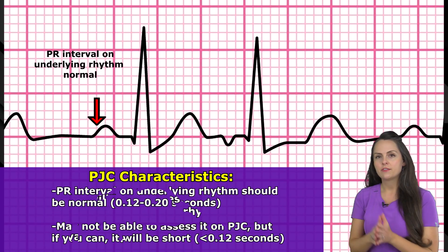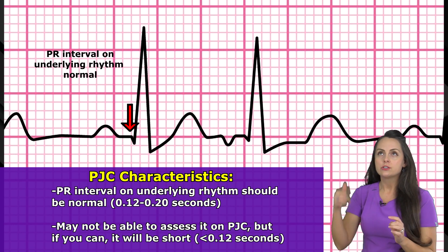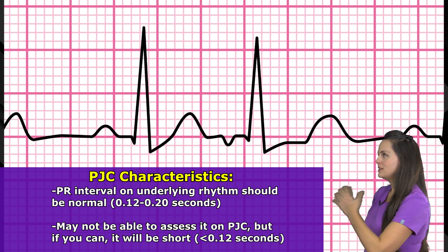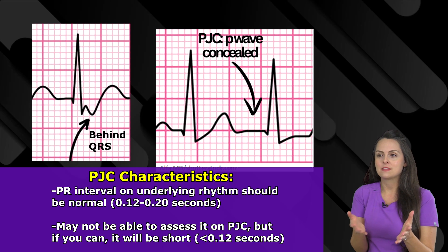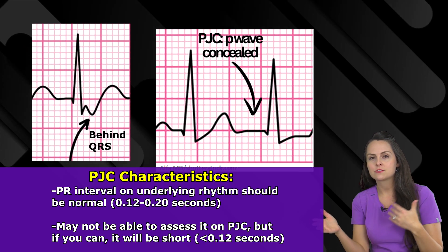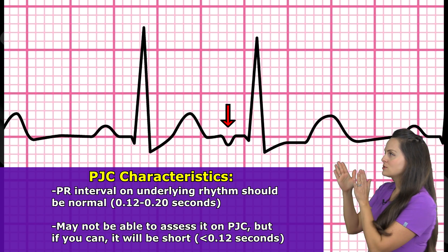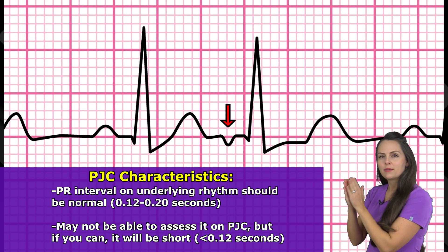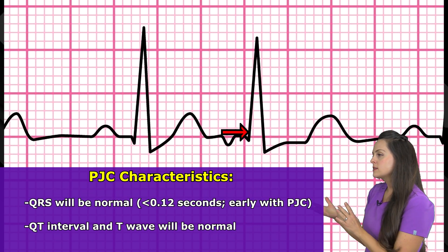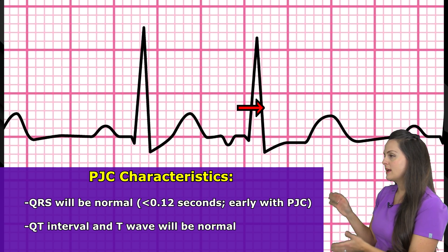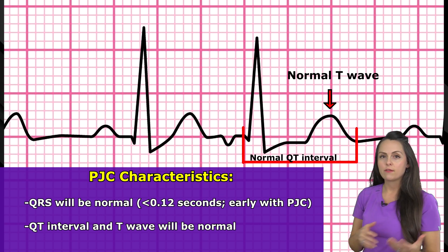The PR interval on the underlying rhythm should be normal — 0.12 to 0.20 seconds. However, with the PJC's PR interval, it may not even be assessable because the P wave could be behind the QRS or concealed. Sometimes the P wave can appear in front of the QRS in PJCs, but it will be so close to that QRS complex that the PR interval will be less than 0.12 seconds. The QRS complex should be normal, less than 0.12 seconds, but it's going to occur early with the PJC. The QT interval and T wave will be normal.